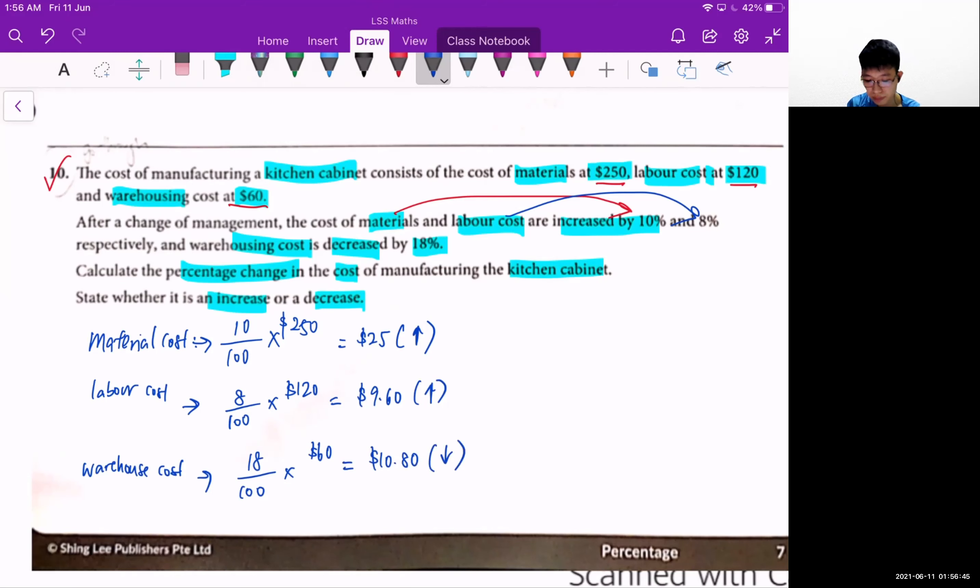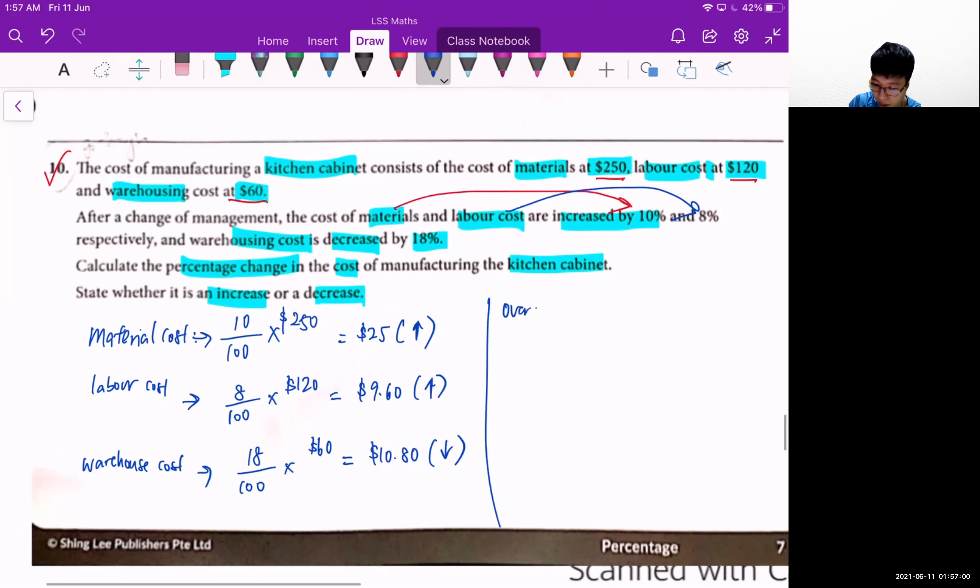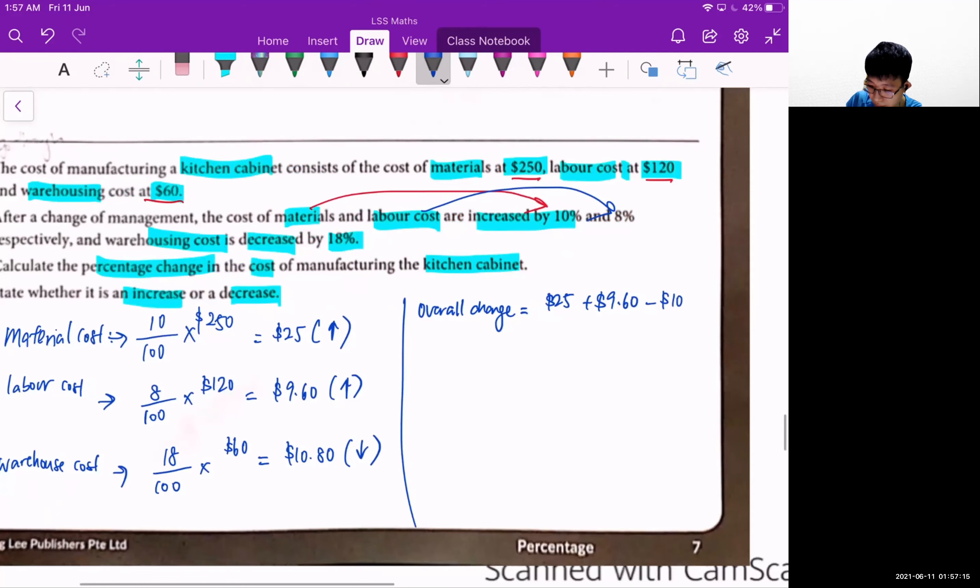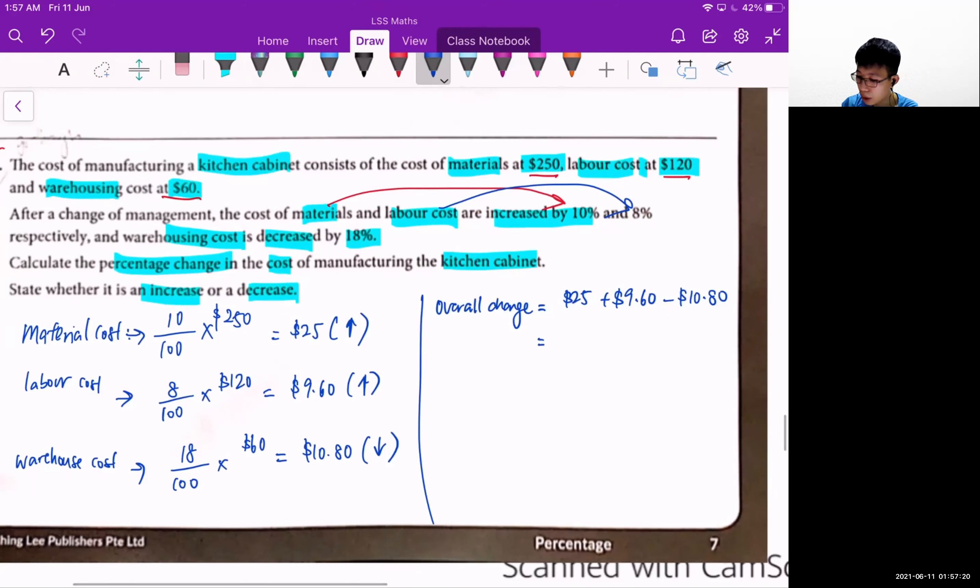To find out whether there's any increase or decrease, first thing you need to add up these values. So the overall change will be $25 plus $9.60 minus $10.80. Because there's a decrease in value.